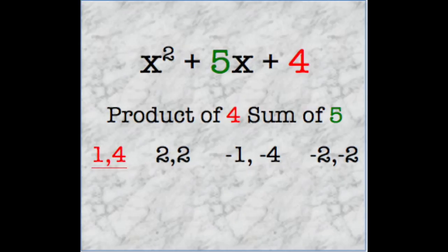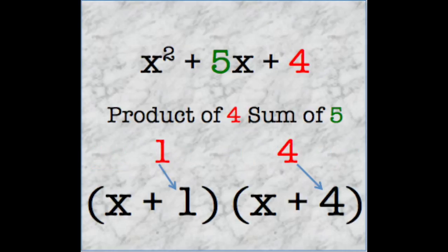Only the pair of 1 and 4 will make a product of 4 and a sum of 5. So, we will now use those two numbers to create our two binomials, giving us x plus 1 times x plus 4.